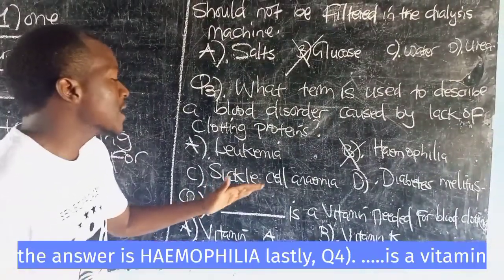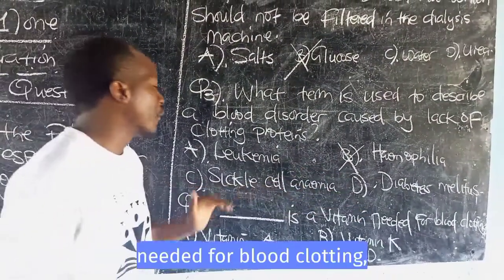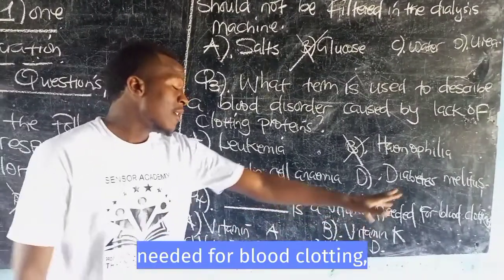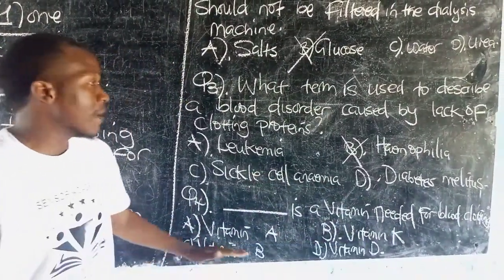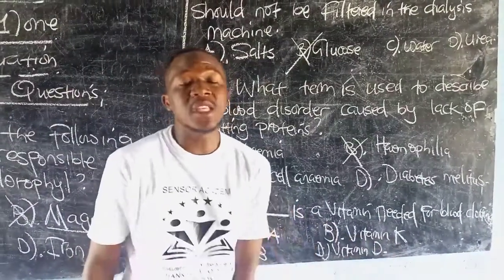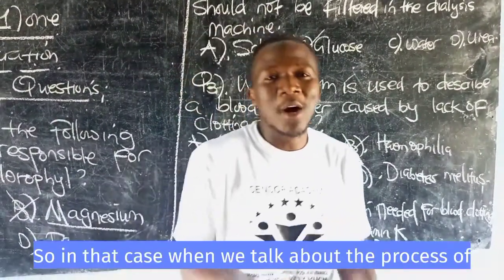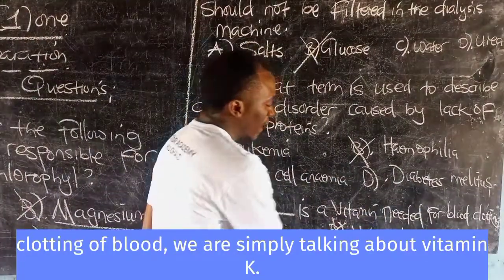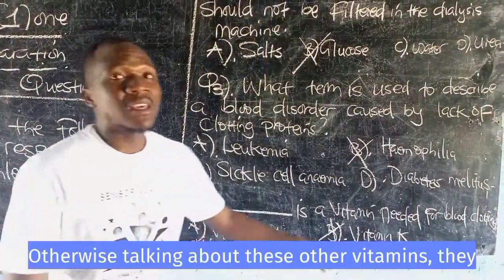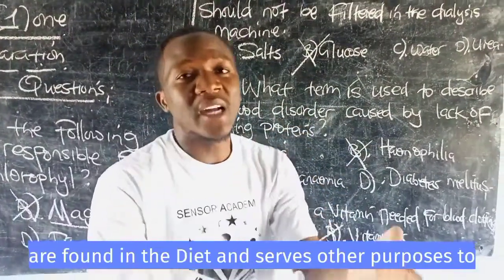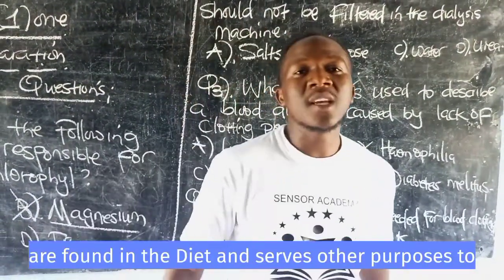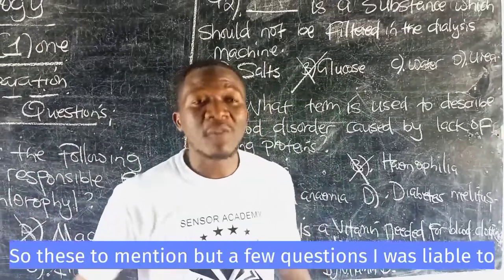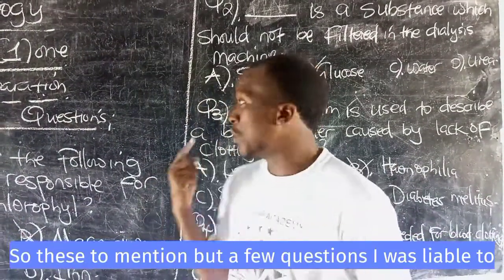Question four: Dash is a vitamin needed for blood clotting. Options are: A — Vitamin A, B — Vitamin K, C — Vitamin B, and Vitamin D. When we talk about the process of clotting of blood, we are simply talking about Vitamin K. The other vitamins serve different purposes to the body. So these are a few questions I was able to cover.